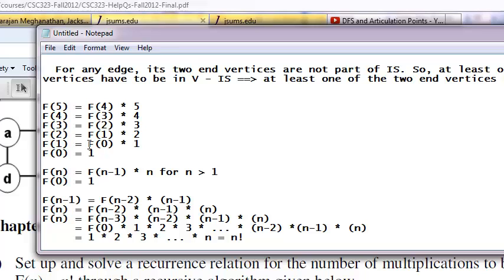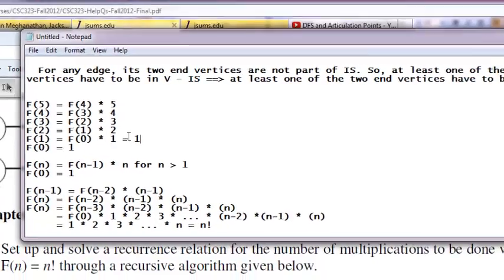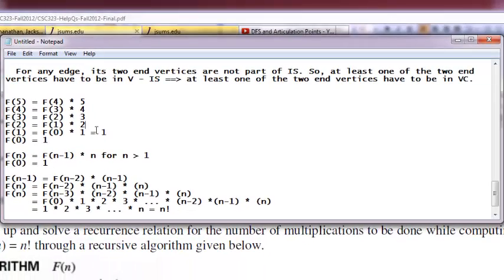So f(1) is going to be f(0) which is 1 times 1 which is 1, and f(2) is going to be f(1) which is 1 times 2 which is 2.